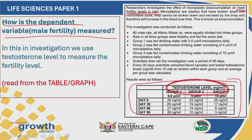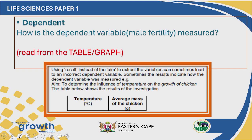Be careful in an exam — are they asking you what the dependent variable is, or how was the dependent variable measured? These are different questions. Here's another example: the aim was to determine the influence of temperature on the growth of chickens. In this investigation, temperature was the independent variable, whereas growth of chickens was the dependent variable. But if we look at the table, we see that they measured the average mass of the chicken. So the dependent variable was the growth of chickens, and how the dependent variable was measured was the average mass of the chickens.